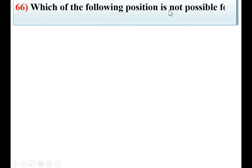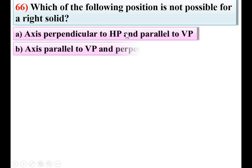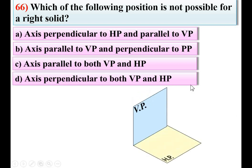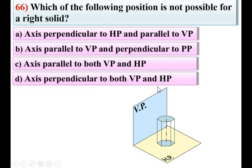Question 66: Which of the following positions is not possible for a right solid? Option A: axis perpendicular to HP and parallel to VP; B: axis parallel to VP and perpendicular to PP; C: axis parallel to both VP and HP; D: axis perpendicular to both VP and HP. If the axis is perpendicular to HP, it is by default parallel to VP. Looking at option D — perpendicular to both VP and HP — that is not possible. So D is the answer for which position is not possible.